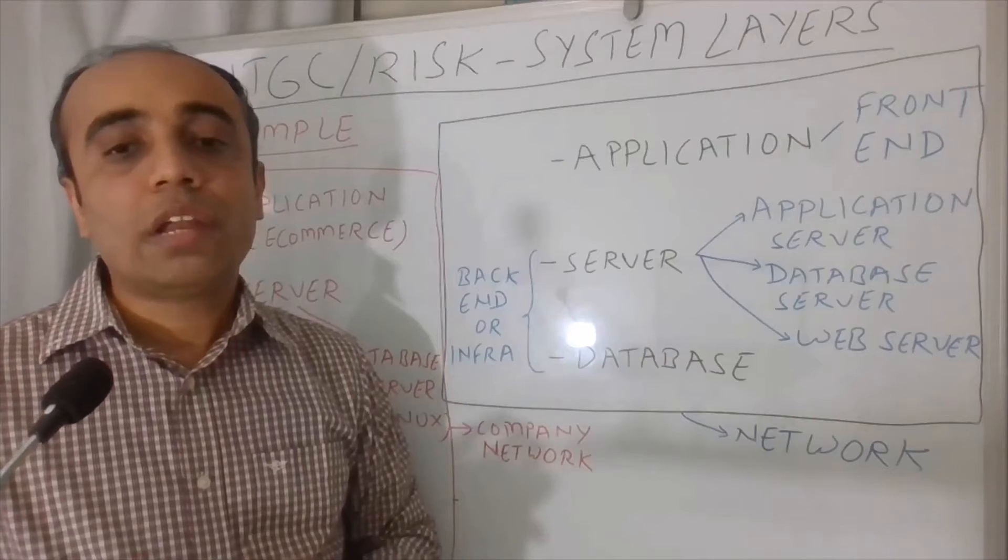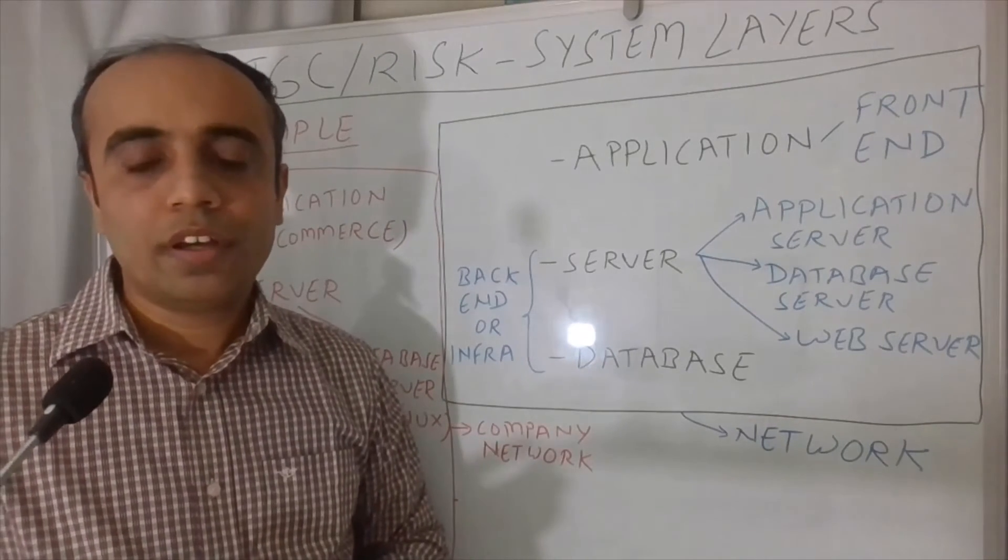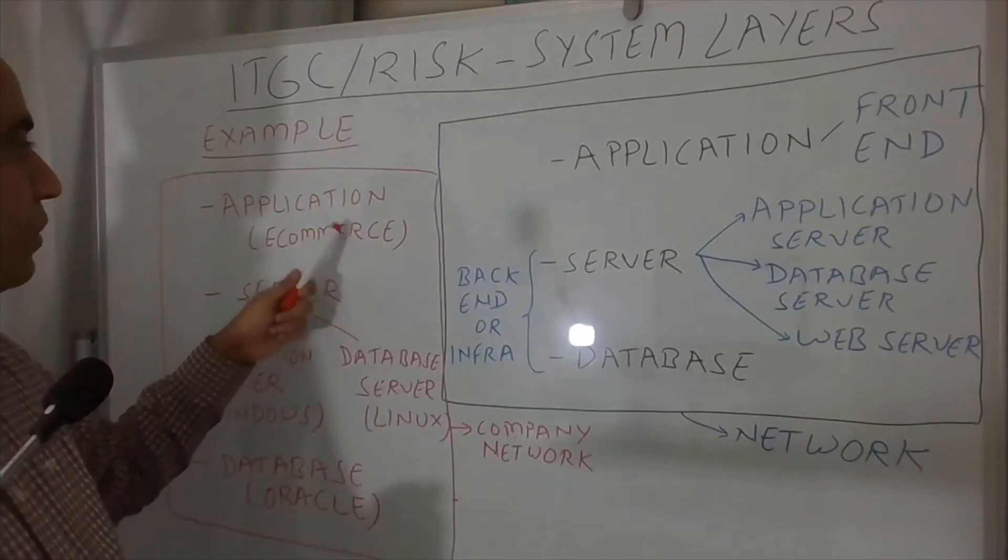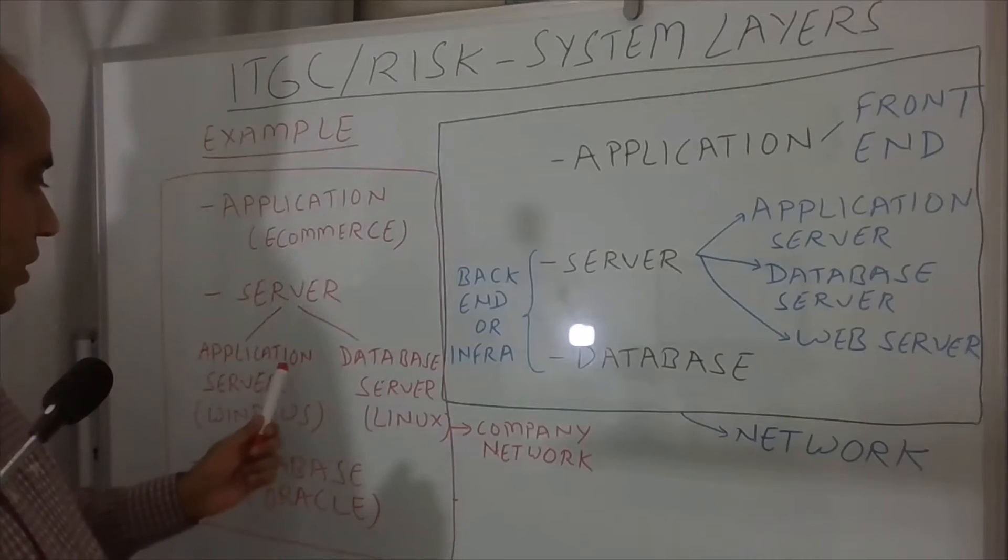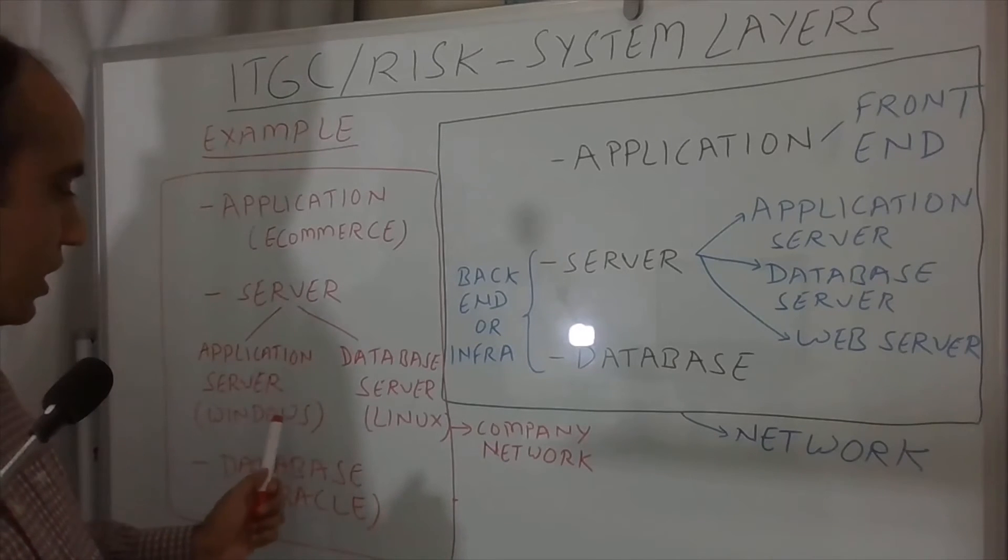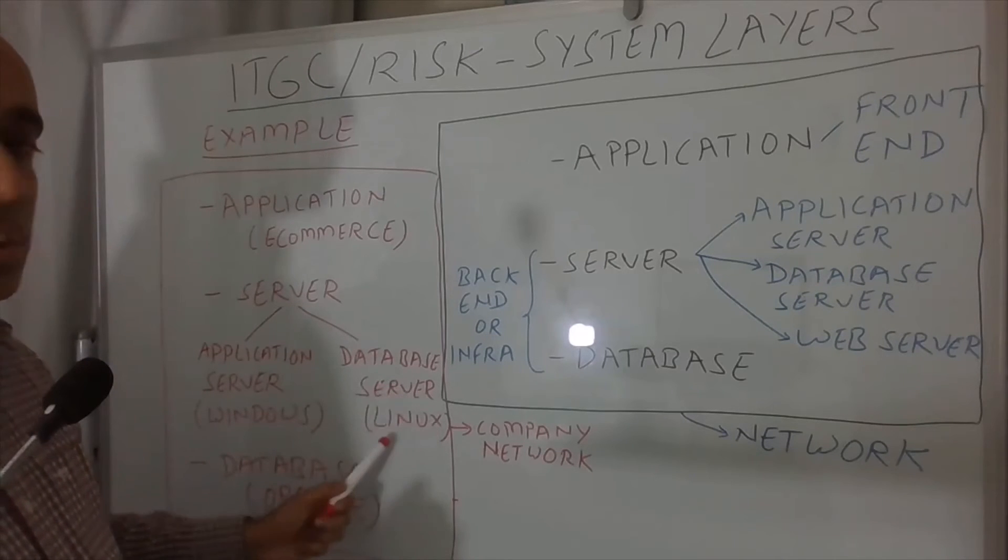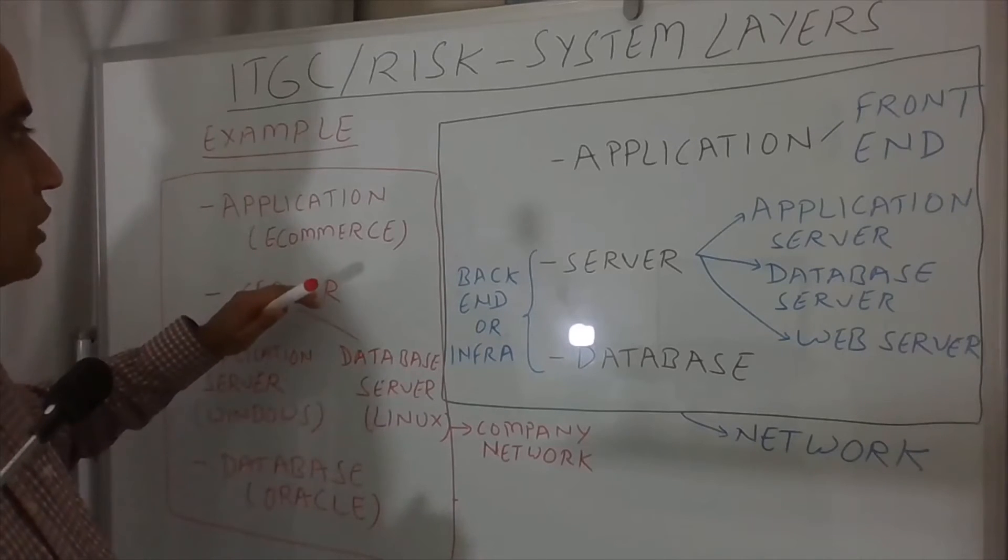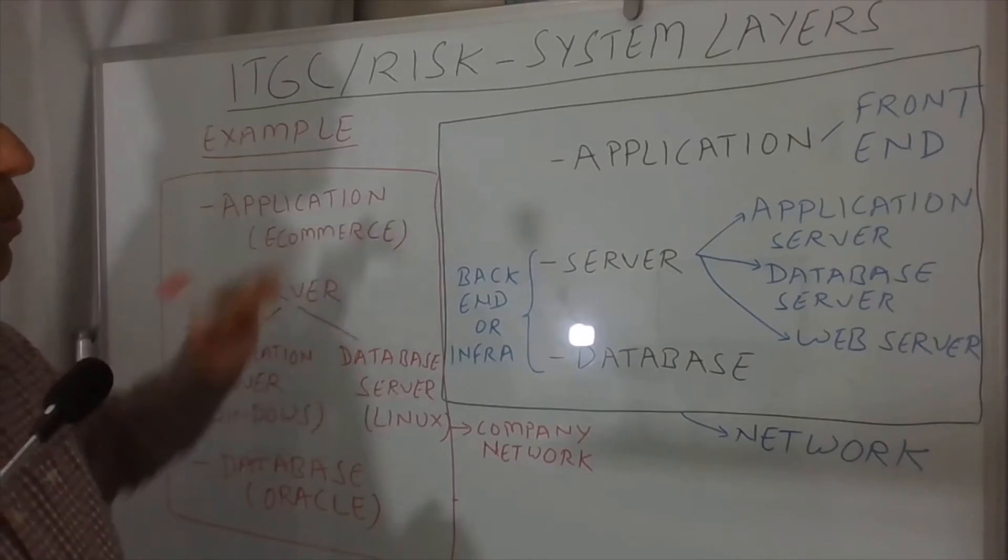Now, let us identify the relevant components from a risk perspective based on what we have learned so far. So e-commerce application becomes our application layer. Our application server in this example is our Windows server. The database server is the Linux server and the database itself is Oracle. So that's where the data is hosted. So we have a flavor of Oracle database, Windows application server, Linux database server, which is all supporting this e-commerce application from a front-end perspective.